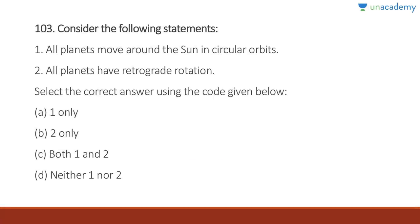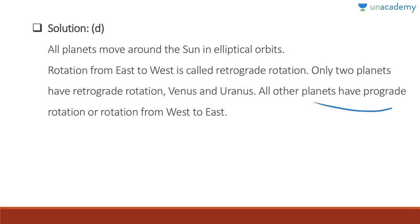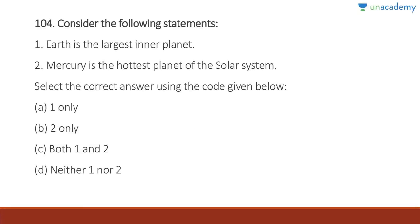Question 103: All the planets move around the sun in circular orbits — absolutely wrong, they move in elliptical orbits. All the planets have retrograde rotation — also wrong; only Venus and Uranus have retrograde rotation, meaning the sun rises in the west and sets in the east for them. The answer is D, neither one nor two. All other planets have prograde rotation, rotating from west to east.